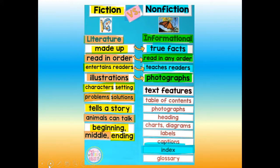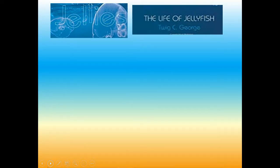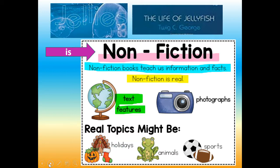Whereas non-fiction has text features: a table of contents, photographs, headings, charts, diagrams, labels, captions, index, and glossary. So Jellies: The Life of Jellyfish is non-fiction. Non-fiction books teach us information and facts. Non-fiction is real; it has text features like photographs. Real topics might be holidays, animals, or sports.